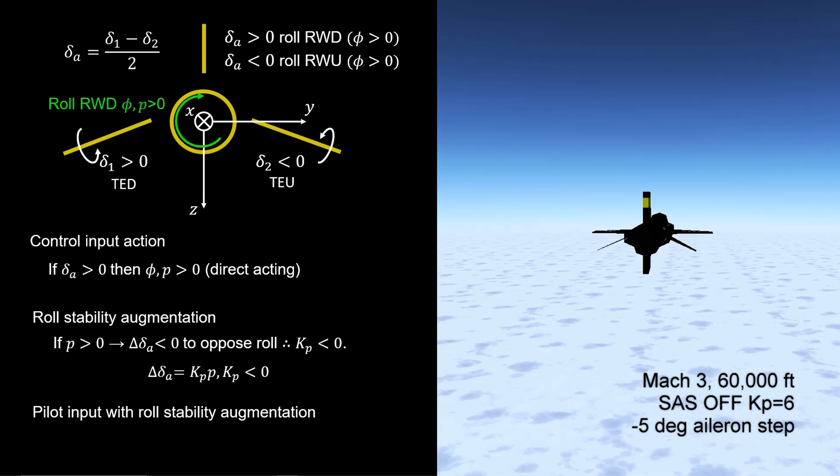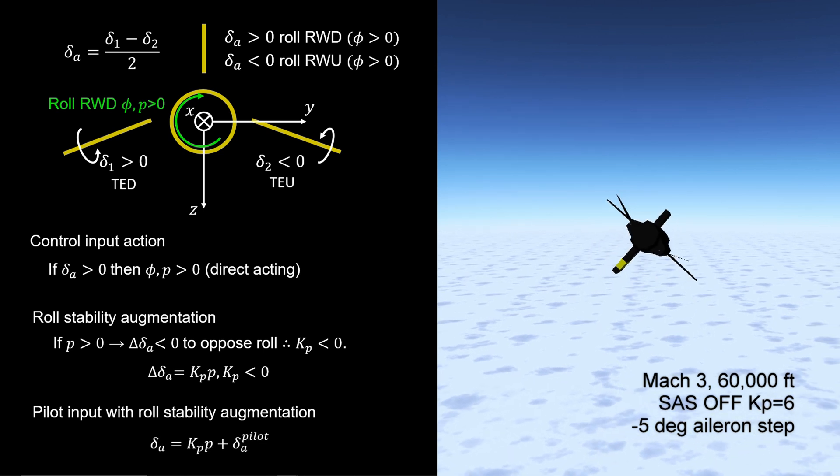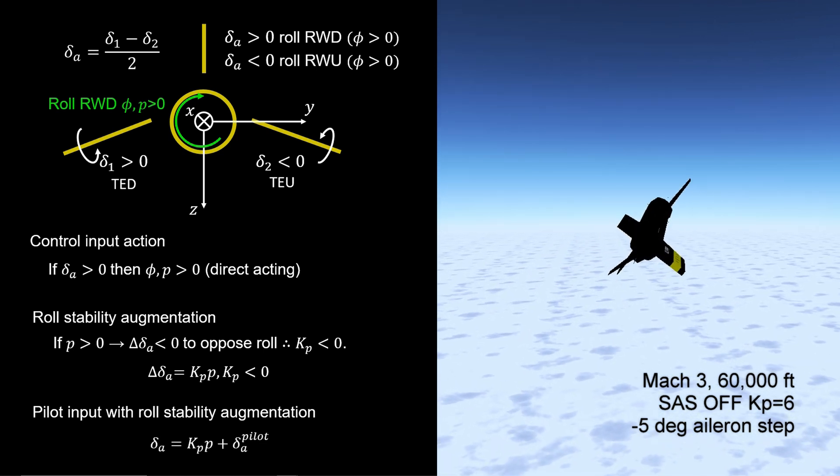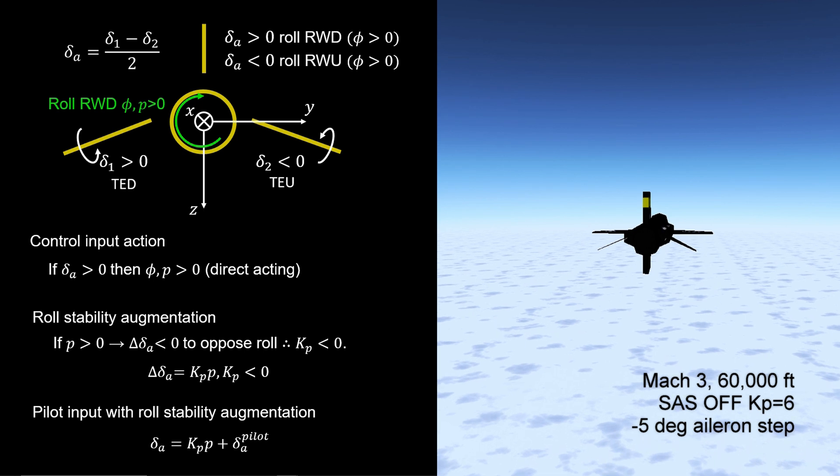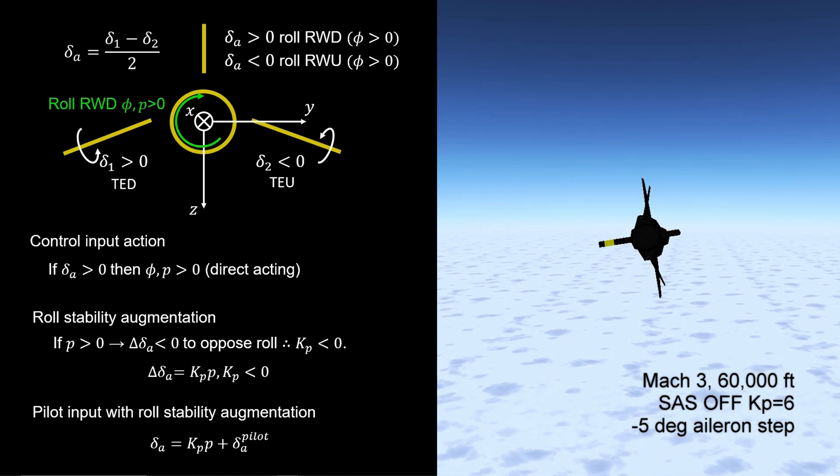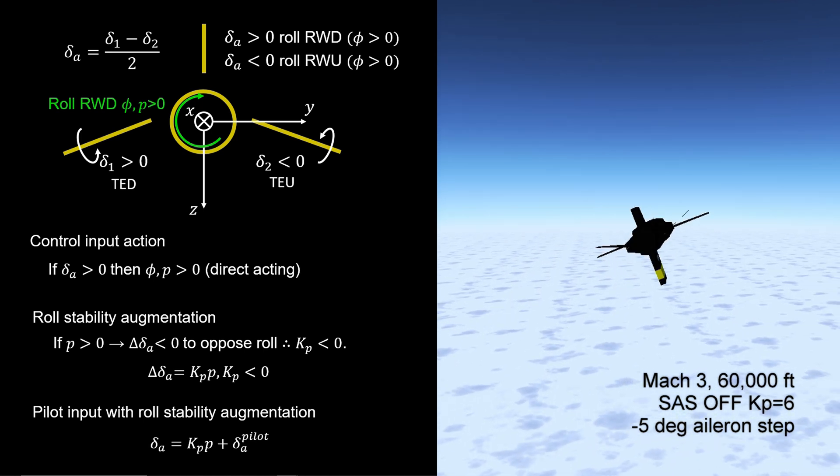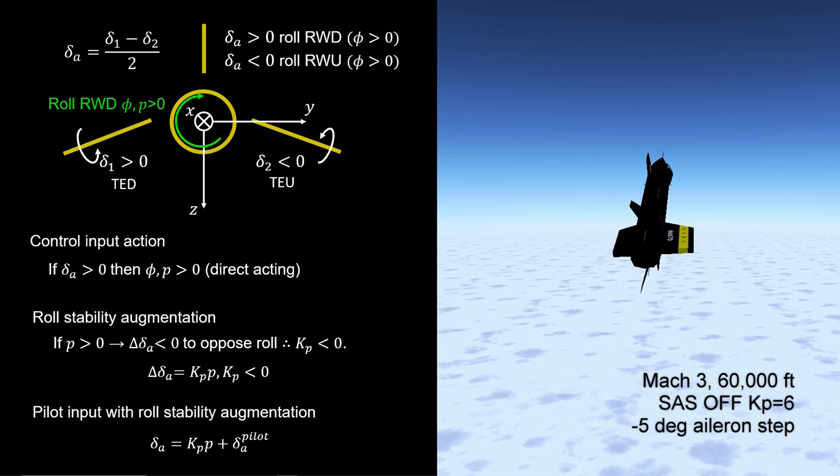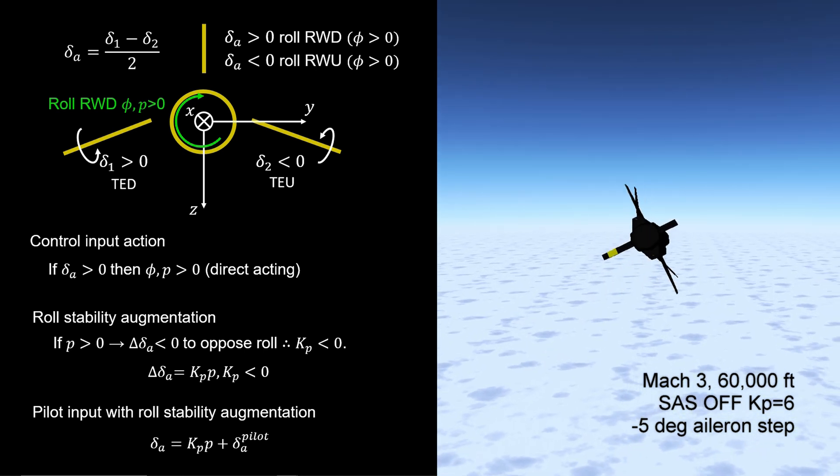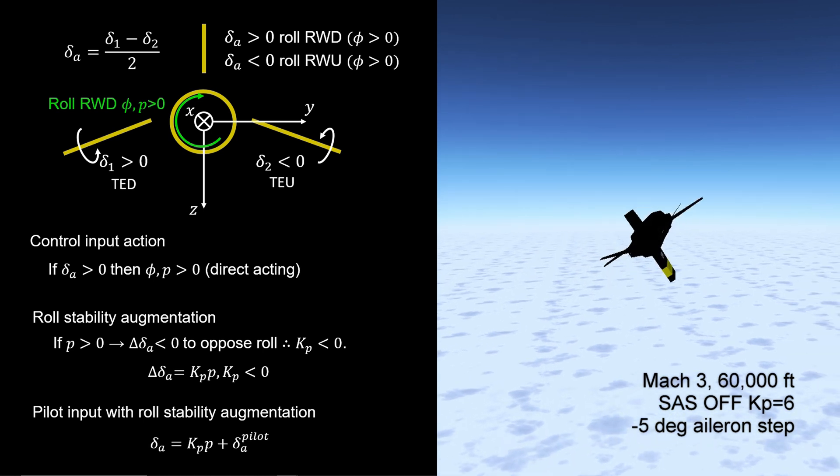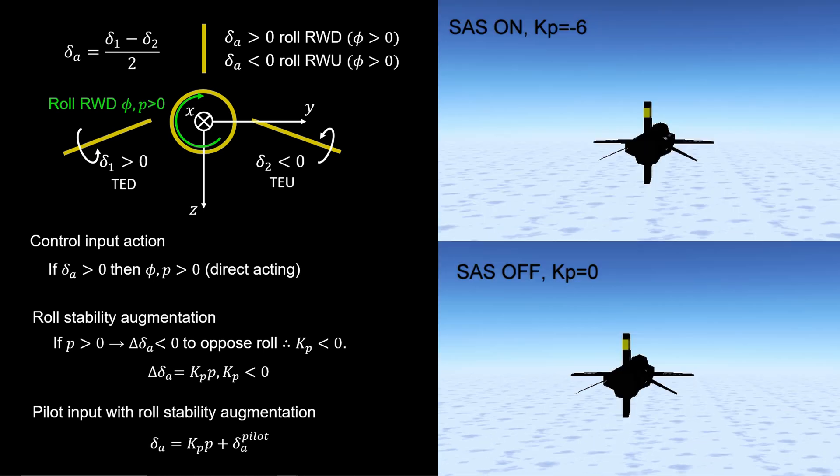This proportional feedback control term is added to the aileron effect from the pilot control aileron to produce a total aileron command to the control actuation system. We observe reduced roll rate due to roll stability augmentation as expected, but also the tendency of the airframe to yaw more now that roll stability augmentation is applied.